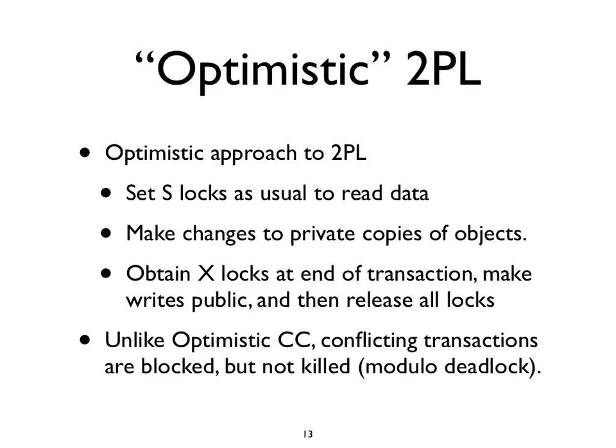There's a slight variant of this called optimistic two-phase locking, which works a bit like regular concurrency control. You do the locking as normal, but rather than writing an object you buffer all your writes, and then at the very end of the transaction you try to obtain exclusive locks on the objects you're writing. This is somewhat like optimistic concurrency control, but rather than killing a transaction that produces a conflict, the conflicting transaction is just blocked until the relevant locks are released. You can still encounter a deadlock situation and may need to kill the transaction, but this is slightly more liberal on that front.